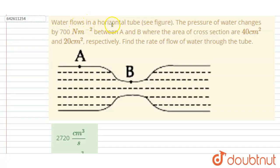Water flows in a horizontal tube. You can see in the figure the pressure of the water changes by 700 Newton per meter square between A and B where the cross sections are 40 cm square and 20 cm square respectively. Find the rate of flow of water through the tube.